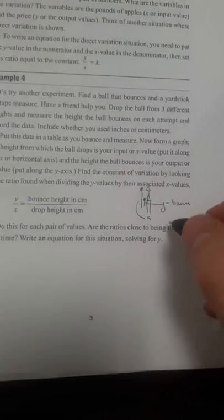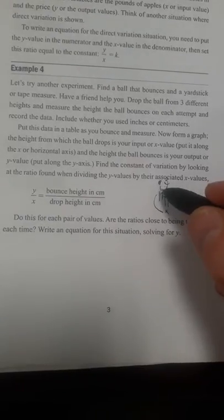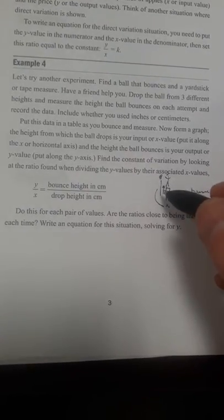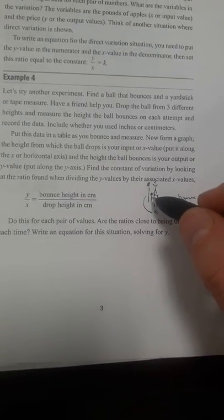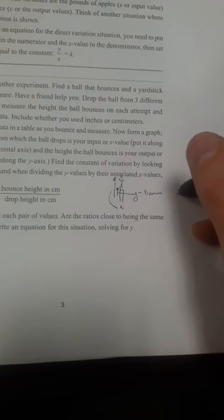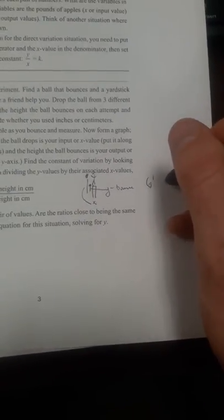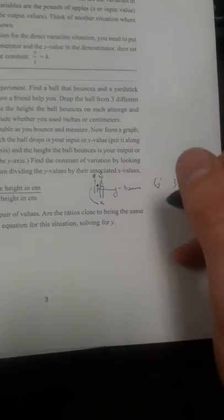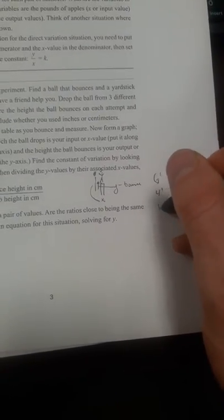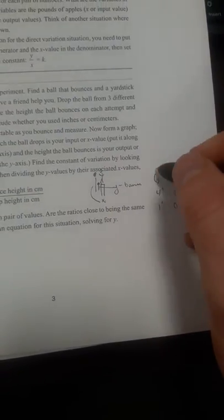And to find out if they're directly related, you measure different heights. So you measure how far does it bounce when you drop it from 6 feet and 5 feet and 4 feet. And then you measure each of those outputs. So let's say if you drop it at 6 feet, it bounces 3 feet. If you drop it at 4 feet, it bounces 2 feet. And if you drop it at 1 foot, it bounces a half a foot.